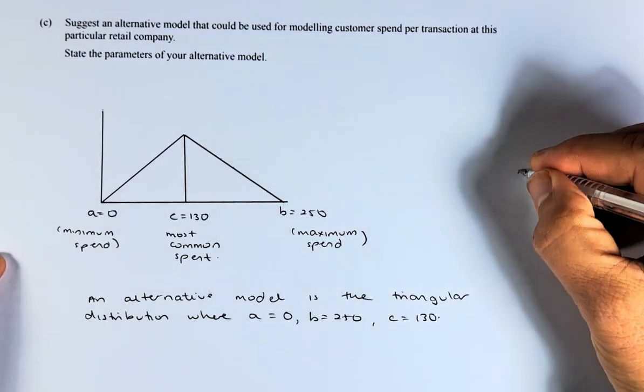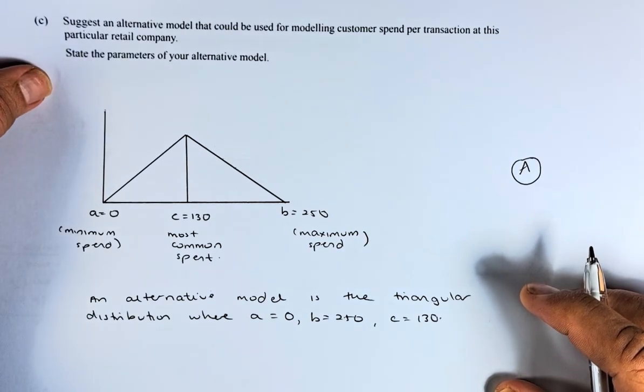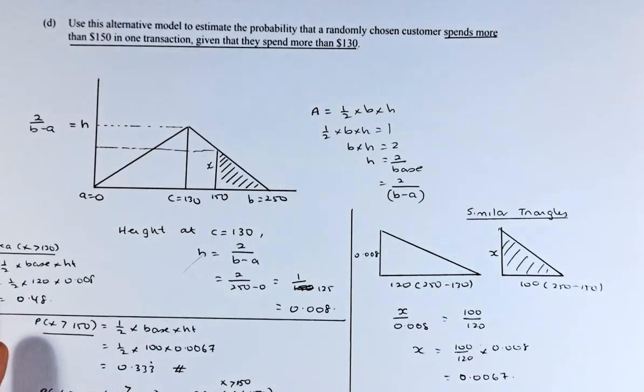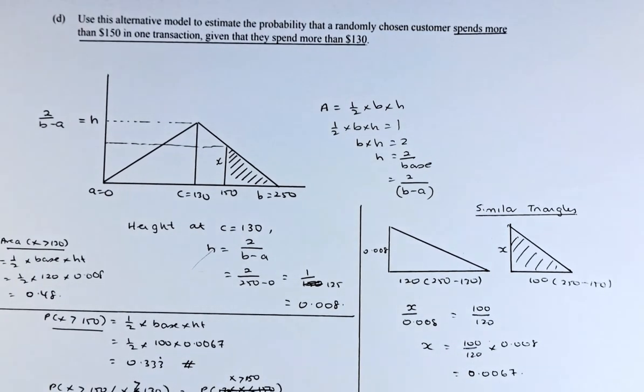So the alternative model to the normal distribution is the triangular distribution where A equals 0, B equals $2.50, and C equals $1.30. If you can do that, that is an achieve. And we shall now go to question 3D, which is an excellent question.